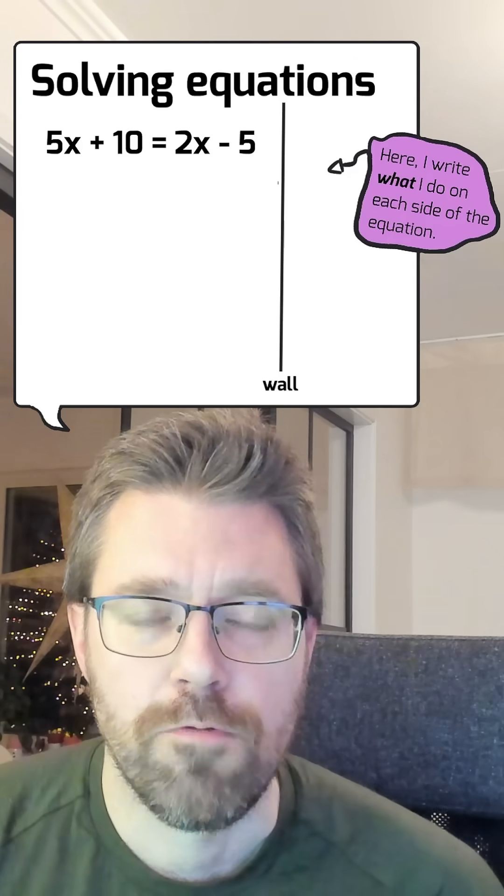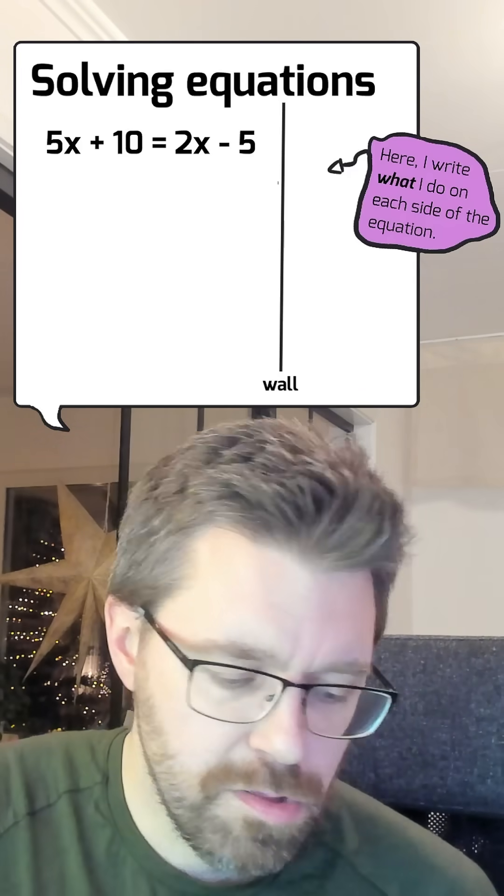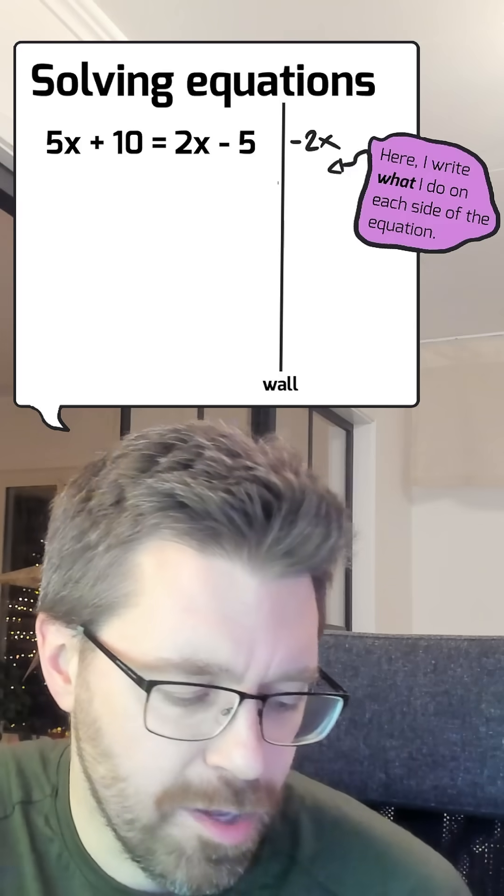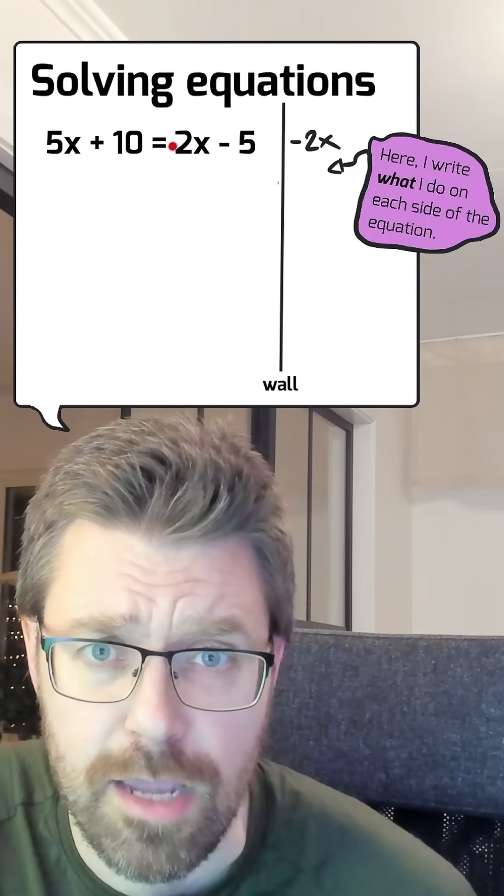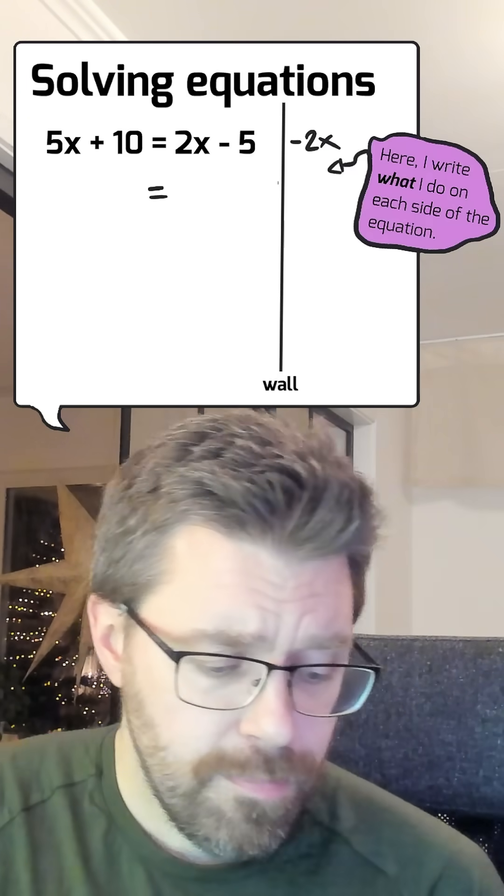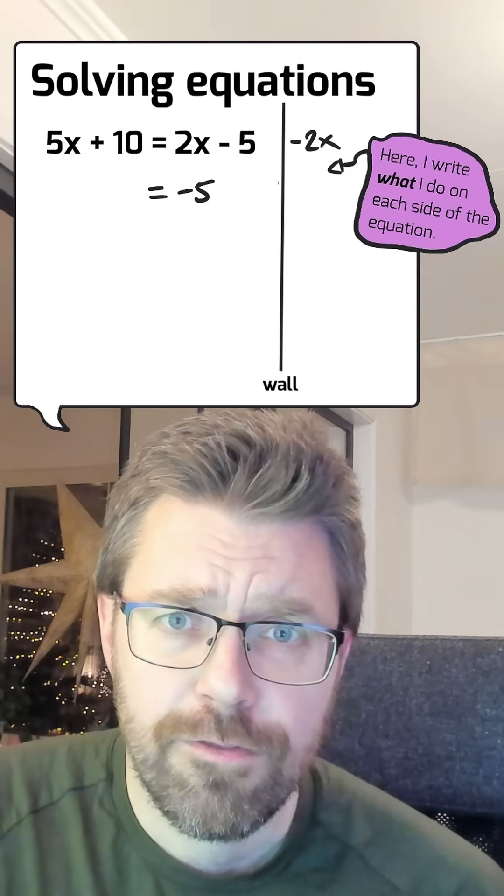The first step here is to subtract with either 2x or 5x to make that x is only on one side. I choose to subtract with 2x, and I use subtraction because it is an invisible plus sign before 2x on the right side.